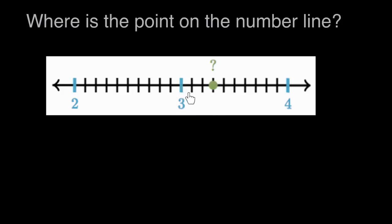So between three and four, there's one, two, three, four, five, six, seven, eight, nine, 10 equal spaces.